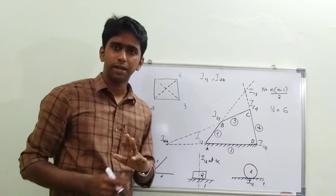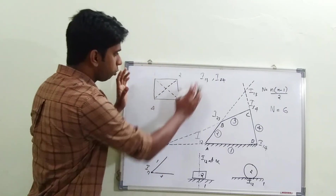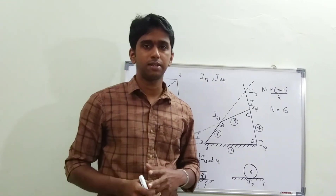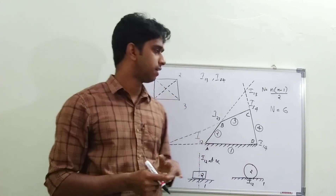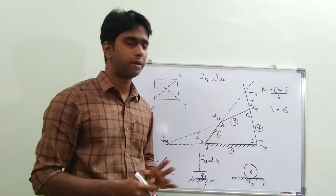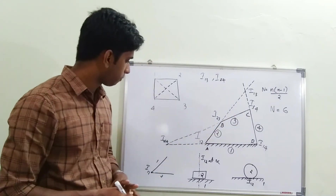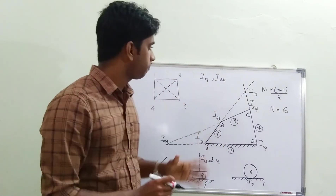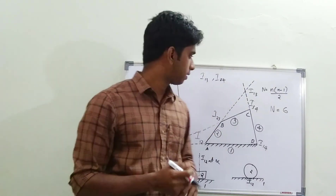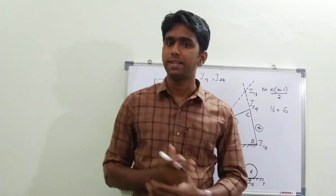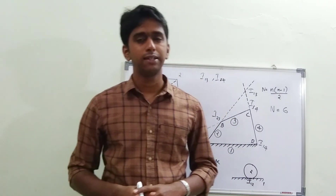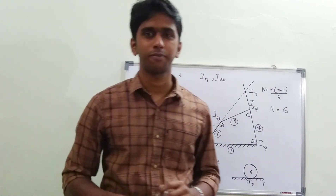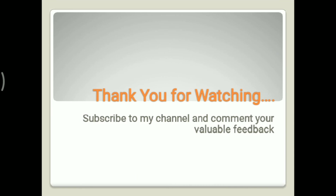This portion is very important — how to locate the secondary instantaneous centers. Locating primary instantaneous centers is very simple and can be done by visual examination itself. I hope you understand clearly how to locate instantaneous centers. If you like this video, please subscribe to my channel and click the bell icon for further updates. Thanks for watching.